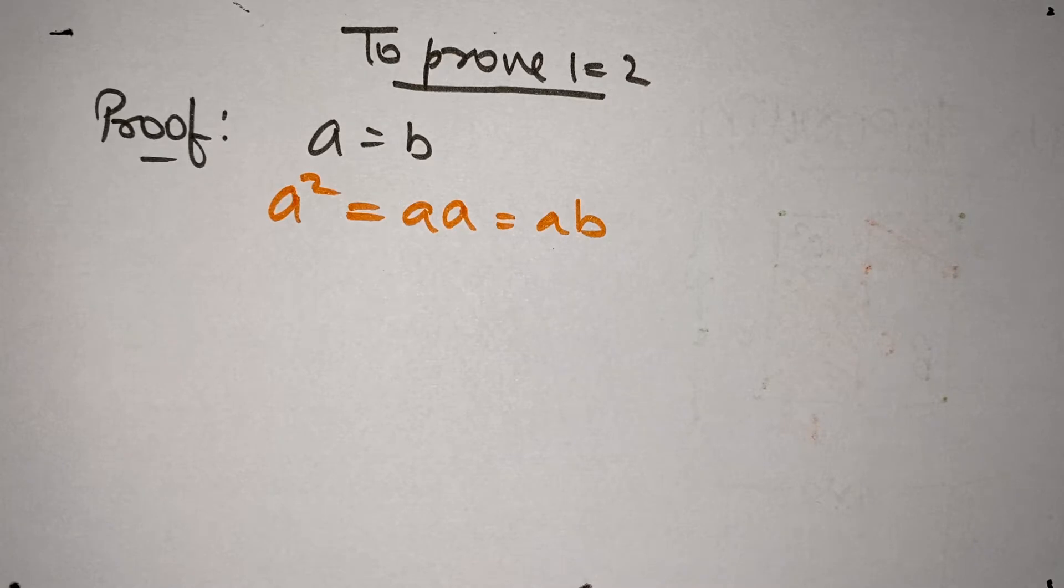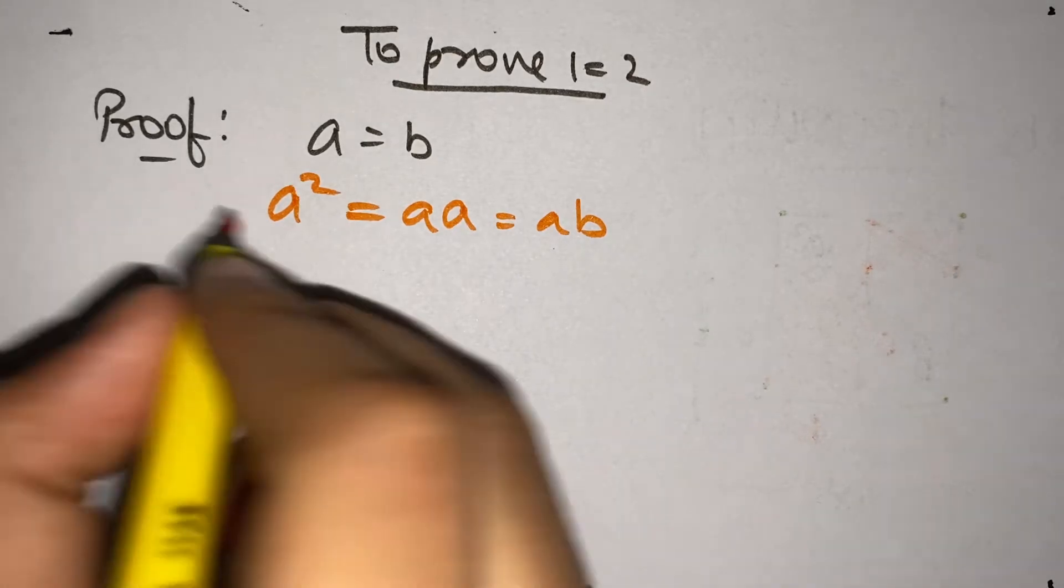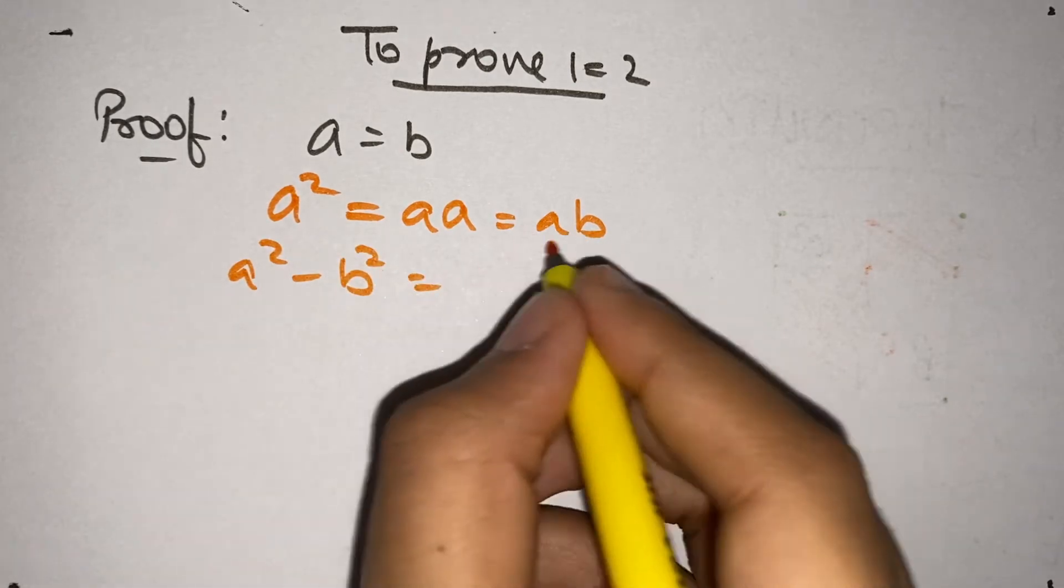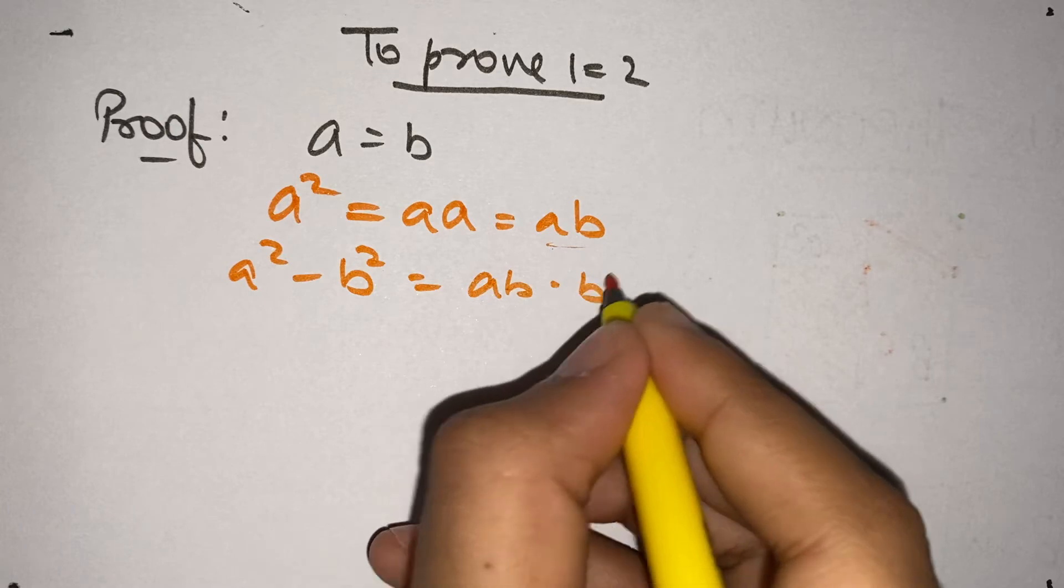Now, let's subtract B square from both sides. A square minus B square is equal to, we are taking this, AB minus B square.